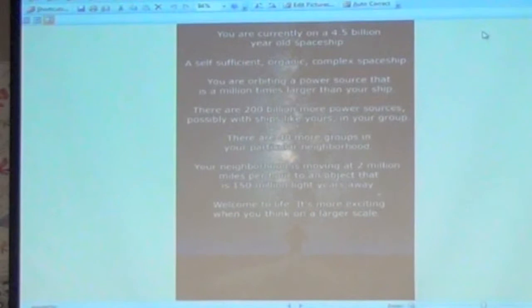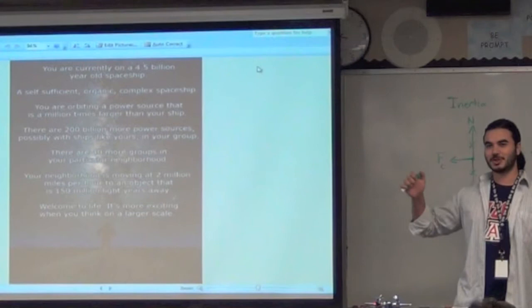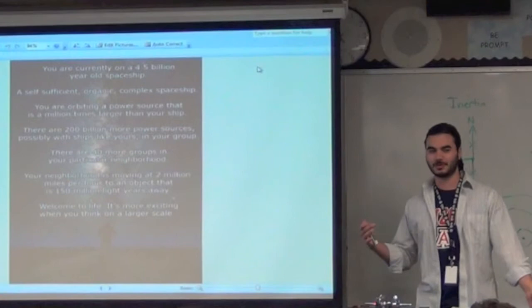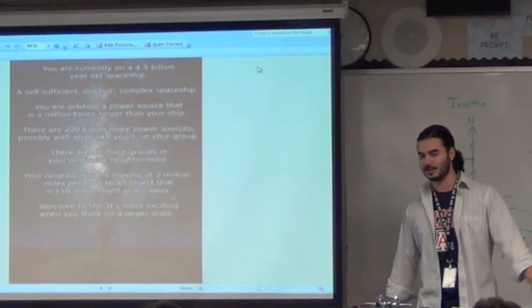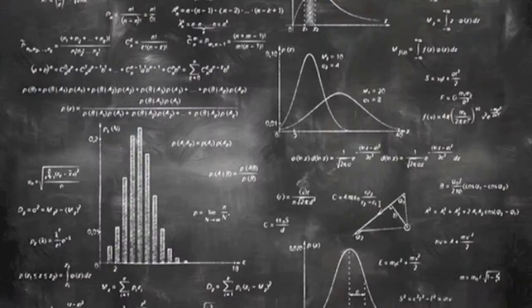We're currently on a 4.5 billion-year-old spaceship, a self-sufficient, organic, complex spaceship. You're orbiting a power source that is a million times larger than your ship. There are 200 billion more sources, possibly with ships like yours in your group. There are 40 more groups in your particular neighborhood. Your neighborhood is moving at 2 million miles per hour toward an object that is 150 million light-years away. Welcome to life. It's more exciting than you think on a bigger ship. My point is I choose the frame of reference. It's more of a mindset, but you guys understand. I choose the frame of reference where Earth is a spaceship. I love the idea that we are currently on a spaceship flying around in space. This spaceship is going to get us pretty close, a lot closer to Mars than we currently are.